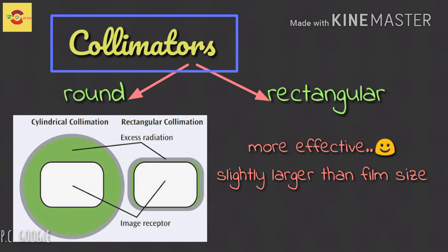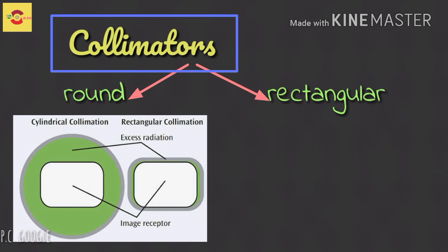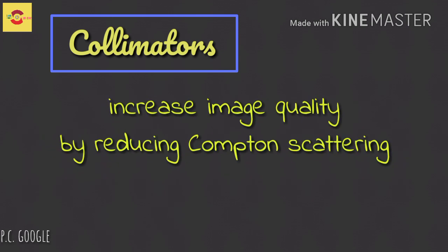Collimators also increase image quality by reducing the number of photons produced by Compton scattering.